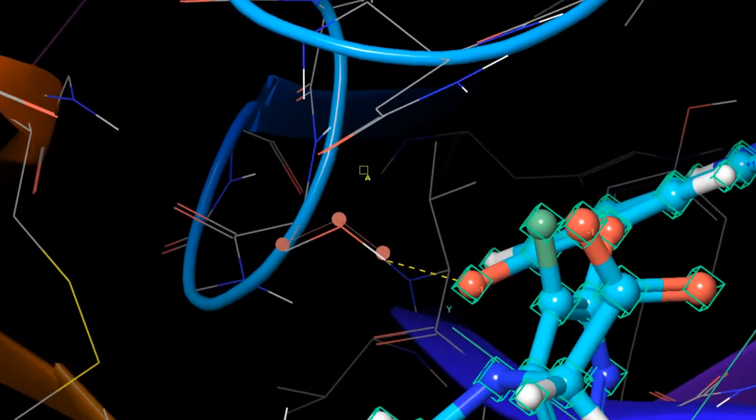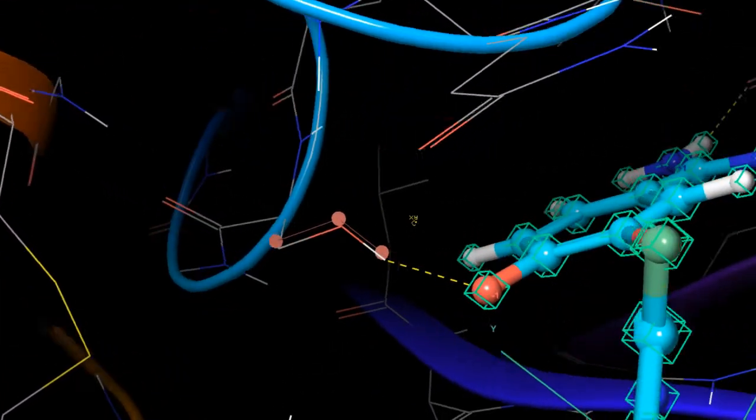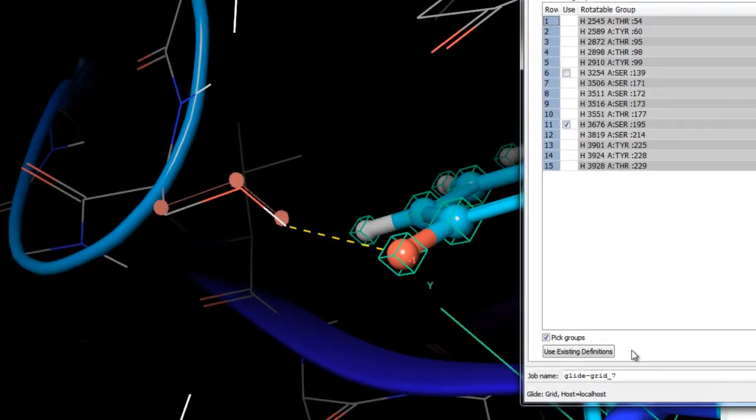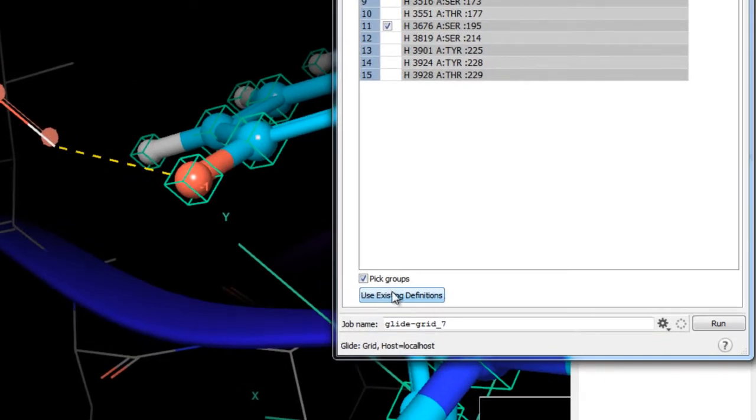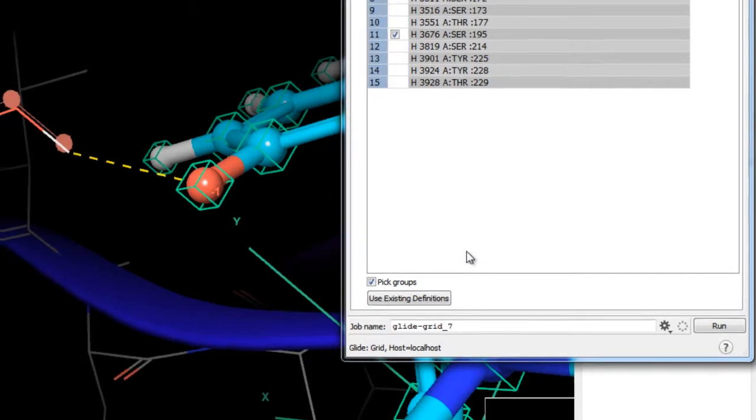If you happen to be using a receptor from a previously prepared grid file with flexible groups already, you can select to use existing definitions. Keep in mind that when docking ligands with flexible groups, the time taken is longer than for non-flexible docking calculations.